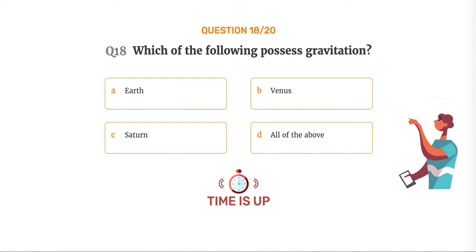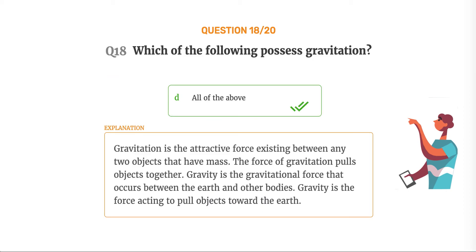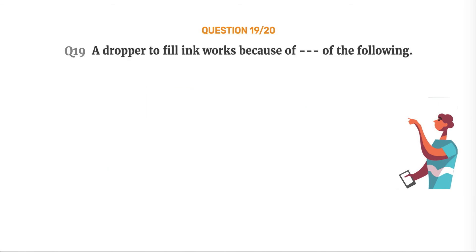The correct answer is Option D: All of the above. Gravitation is the attractive force existing between any two objects that have mass. The force of gravitation pulls objects together. Gravity is the gravitational force that occurs between the earth and other bodies. Gravity is the force acting to pull objects toward the earth.